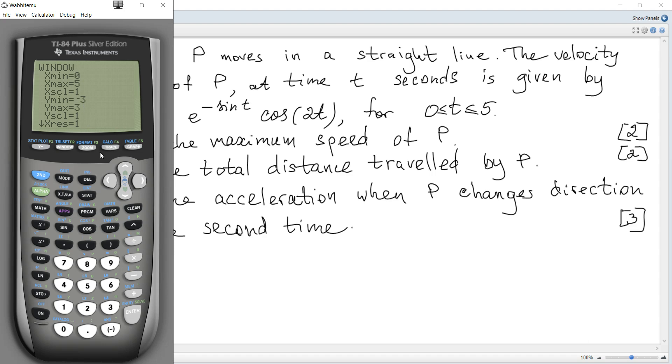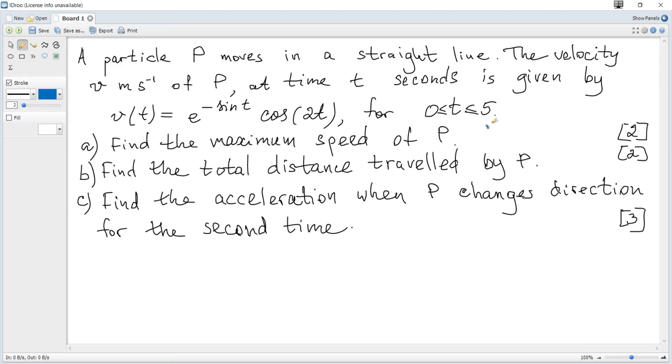You can see that V(t) looks like this, and it's clear that the maximum speed is the minimum velocity at this point. So we need the minimum, and you can see that it's 2.72 to three significant figures, meters per second.